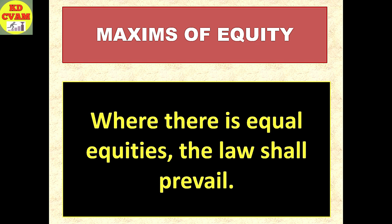After a few days, A got a better price, so A sold it to C. Now C did not know that there was an oral agreement between A and B. C purchased the property and got the documentation done. So now B and C both are carrying equal equities. But as we know that equity will never surpass the law. Here, C also has a legal right in addition to the equitable right. Therefore, the law shall prevail — the property will go to C. The equitable right remains with B only.